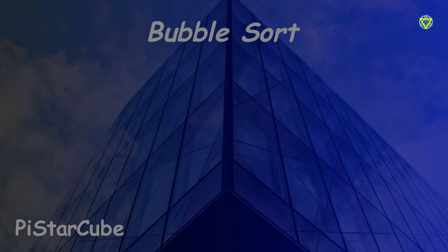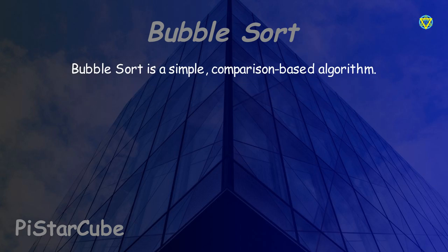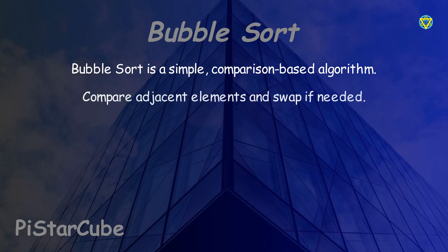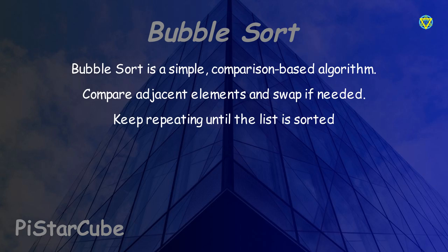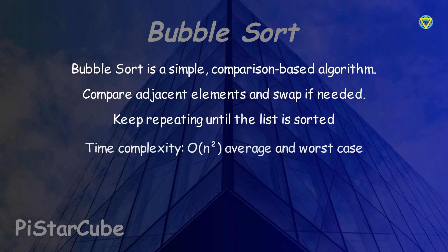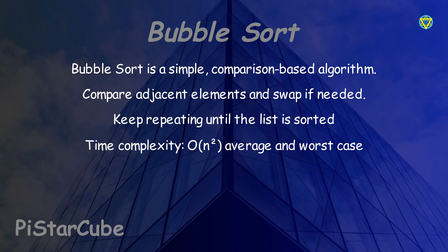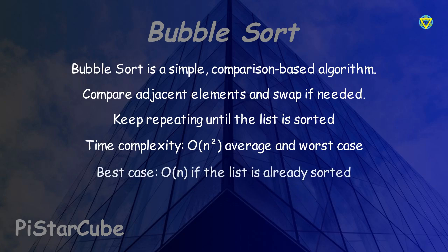First, let's quickly go over what bubble sort actually does. Bubble sort is one of the simplest sorting algorithms out there — it just compares neighboring elements and swaps them if they are in the wrong order. We keep doing this over and over until the whole list is sorted. In the average and worst cases, its time complexity is O(n²), but if the list is already sorted it can be as fast as O(n) with a small optimization.